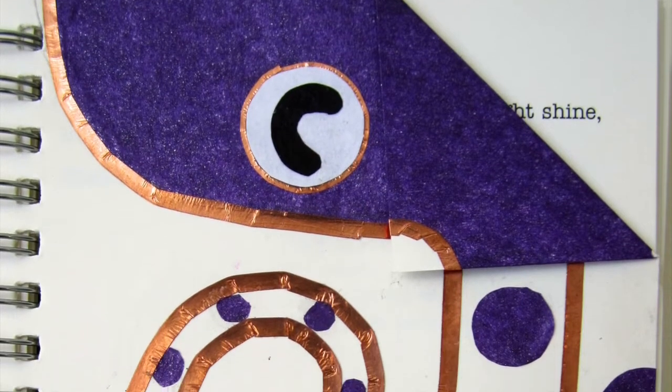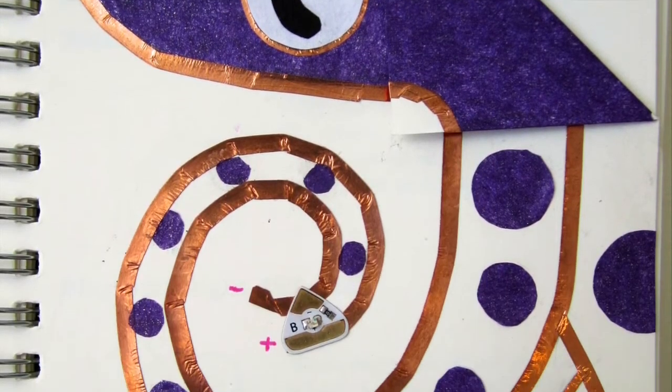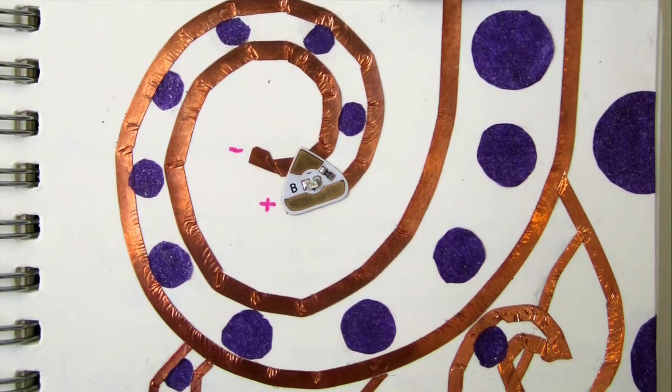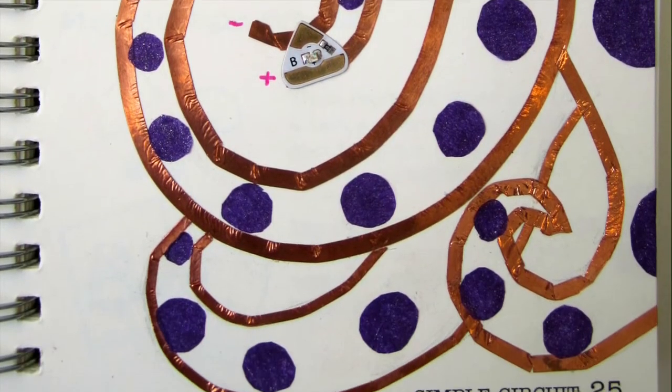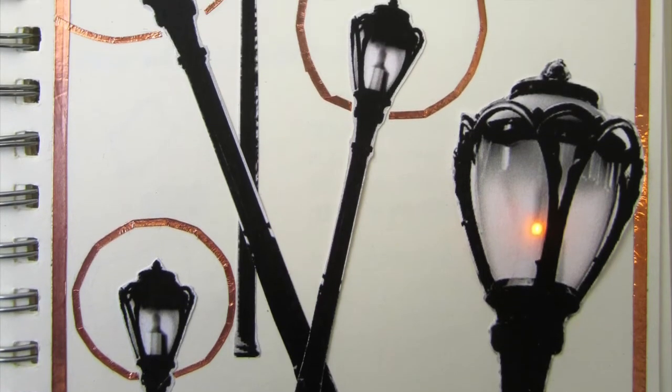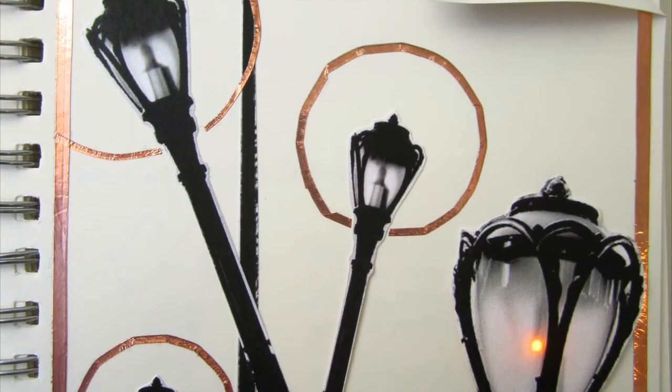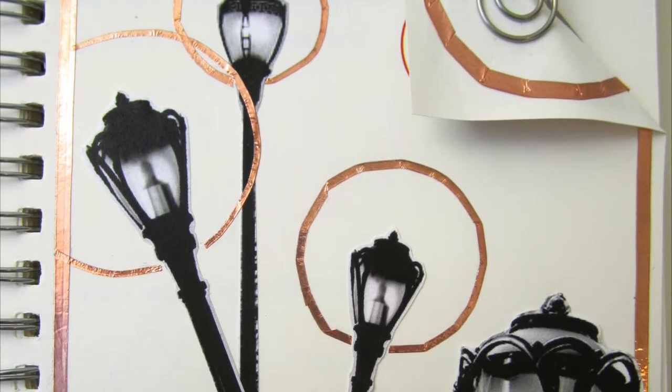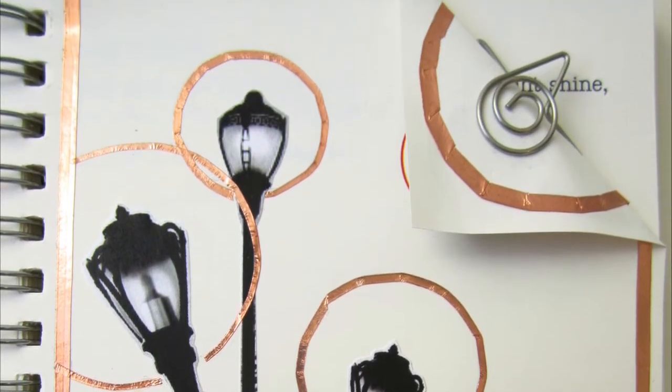After each guided template and drawing activity, there's space for students to design their own circuits. This way they can practice what they learned and make the book their own. The idea is that once students complete the entire book, they've practiced creating all different kinds of circuits, and they also have a reference to look back at when they're trying to design their own projects.